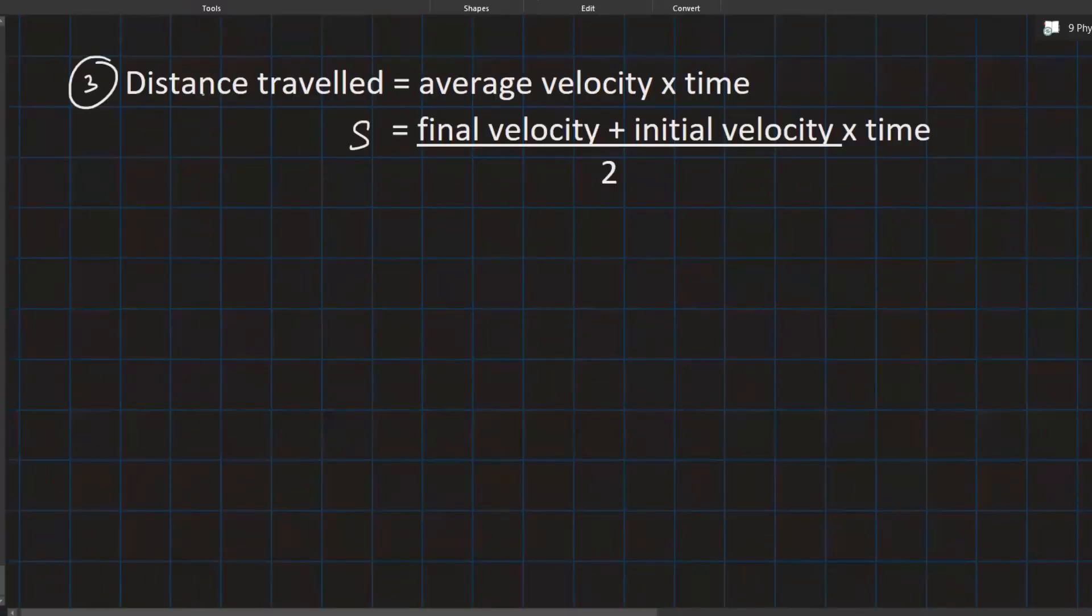To derive the third equation, I rewrite the same thing what we have done for the second one. So that is distance traveled is average velocity into time. And s is equal to the average velocity formula is final velocity plus initial velocity upon two. So again, I write it mathematically as v plus u upon two into t.